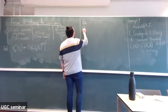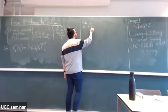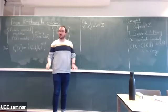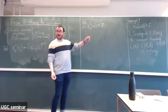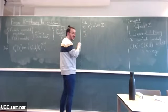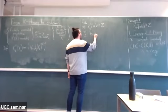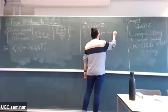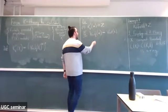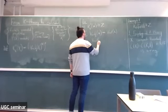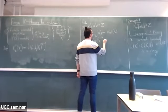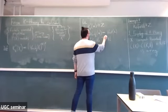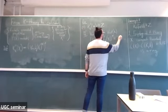An example: the K⁰ of the one-point space is the integers. Every talk is supposed to include a proof, so here's this one. K vector bundles over a point are the same as K vector spaces, and vector spaces are classified by dimension, so isomorphism classes are indexed by the natural numbers. Group-completing the natural numbers gives the integers.